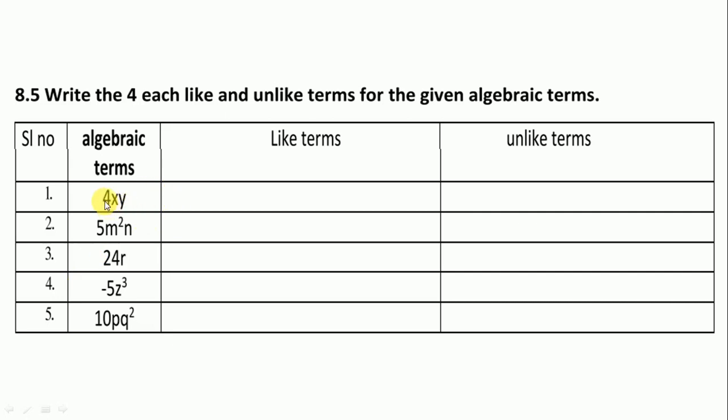For like terms, we change just the number. Here is 4xy. You can write any number instead of 4, so we write 10xy, 100xy, -5xy, 1xy. We kept xy as it is and just changed the number.